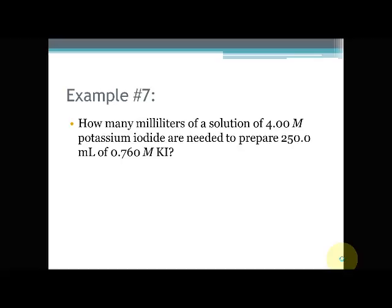All right, Zach with example seven. How many milliliters of solution of 4.00 M potassium iodide are needed to prepare 250.0 milliliters of 0.760 M potassium iodide? Well, as you guys should know, this is V₁, this is M₁, this is V₂, and this is M₂.